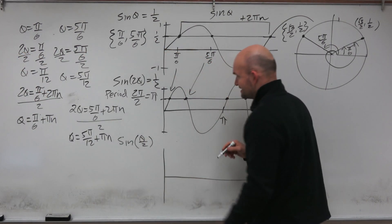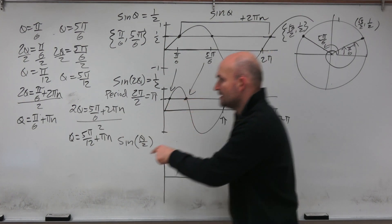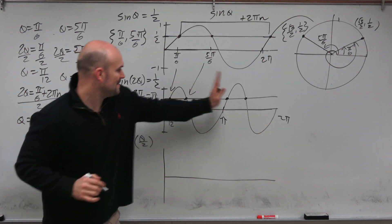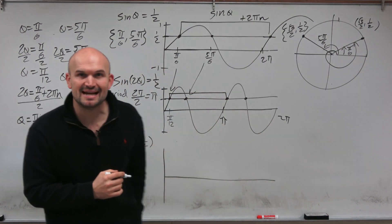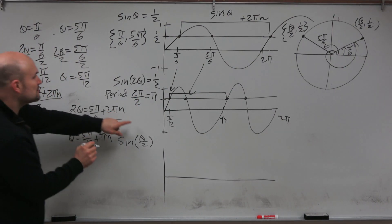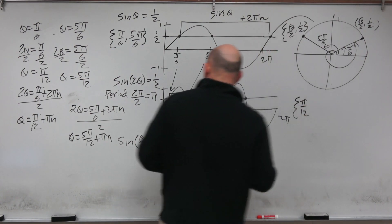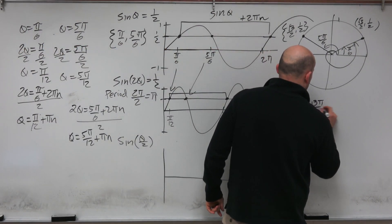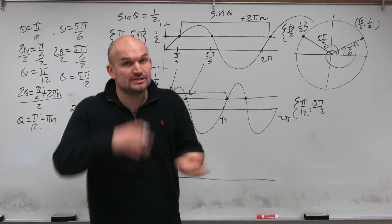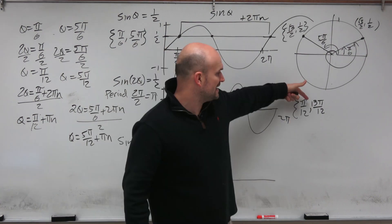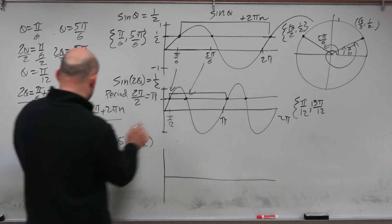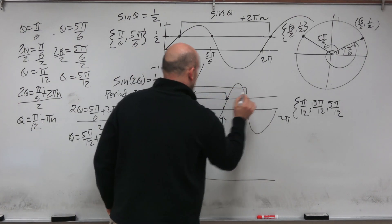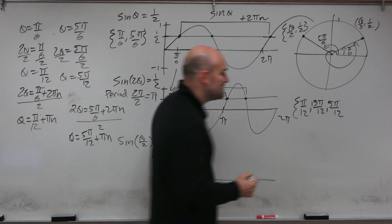So now I can find all four solutions. Starting with pi over 12, adding pi (which is 12 pi over 12), I get 13 pi over 12. I can't add another 12 pi over 12 because two pi is 24 pi over 12, and adding another 12 would give 25 pi over 12, which is outside the interval. Then from five pi over 12, adding 12 pi over 12 gives 17 pi over 12. So the solution set is pi over 12, 13 pi over 12, five pi over 12, and 17 pi over 12.